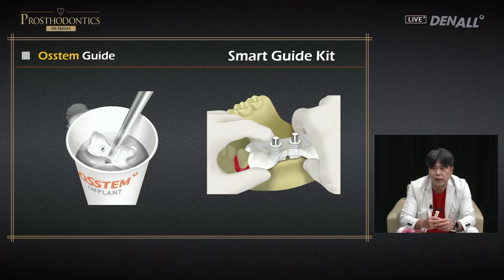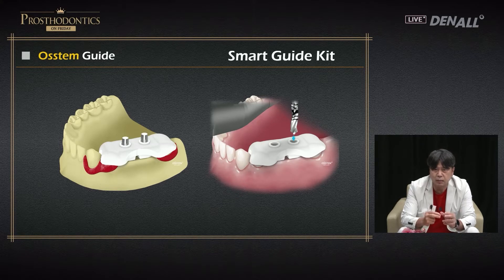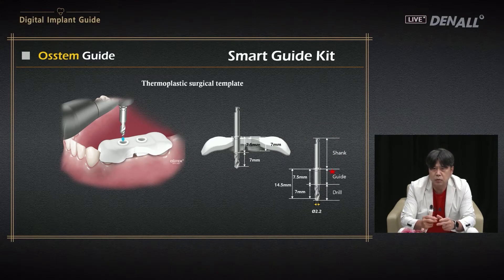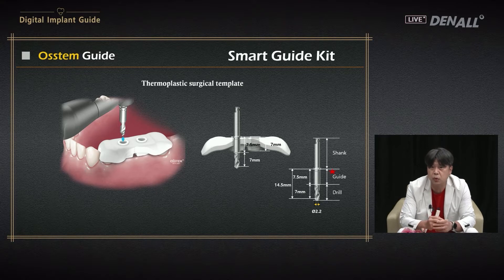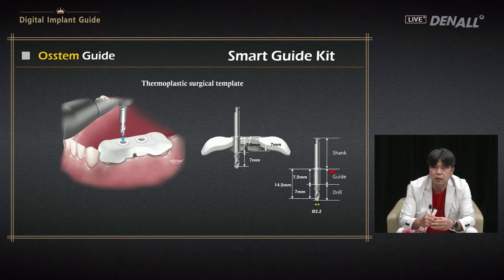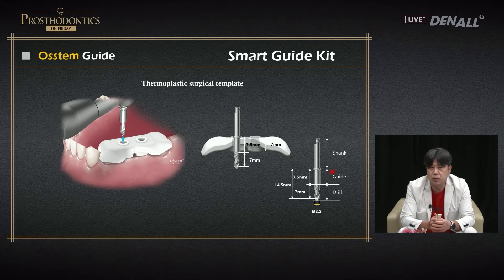The smart guide kit uses thermoplastic material. It is dipped into hot water at 60 degrees Celsius for a minute, then becomes soft and moldable. On a model, a guide is made; after a minute in room temperature it hardens. After sterilization, it can be used for drilling. If you use the smart guide, the distance between implants and the tooth can be controlled, axial inclination can be controlled, and the depth is limited — for example, to seven millimeters.